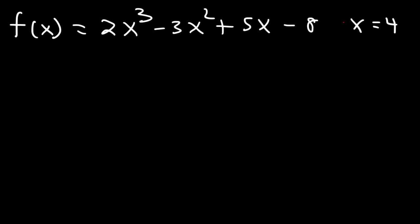So what we're going to do now is we're going to test what we just learned. So let's say that f of x is 2x cubed minus 3x squared plus 5x minus 8. And let's evaluate this function at x equals 4. And then we're going to use synthetic division to confirm our answer.